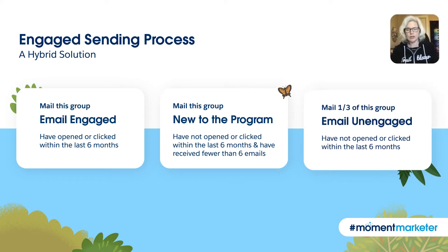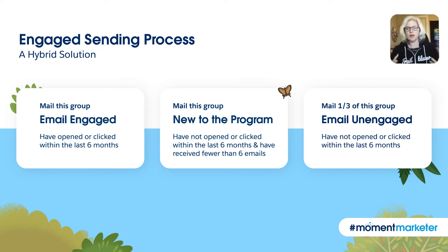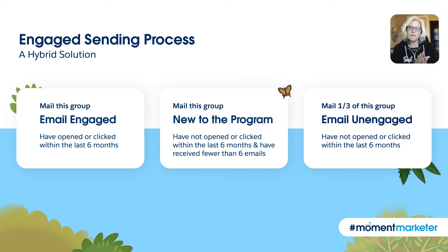Essentially what we did was create three distinct buckets within our total active audience. The first bucket is pretty obvious — it's the engaged people, the ones that we actively want to send to. This is the email best practice group of people that are engaging regularly with the brand, and we don't want to stop their cadence or slow them down.